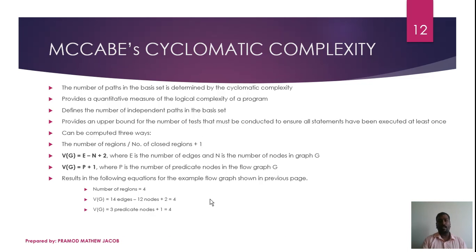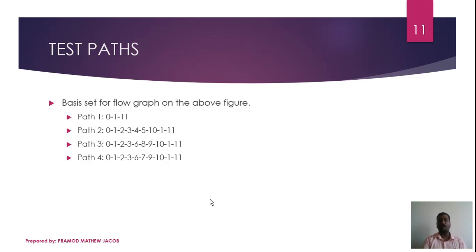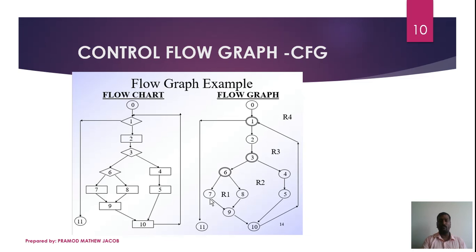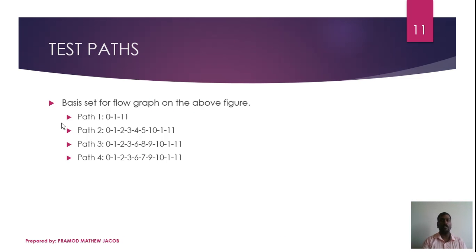McCabe's Cyclomatic Complexity determines the number of independent paths in the program and is represented as V(G). It has three methods. Method 1: V(G) = E minus N plus 2, where E is the number of edges and N is the number of nodes. With 14 edges and 12 nodes: 14 minus 12 plus 2 equals 4 independent paths.